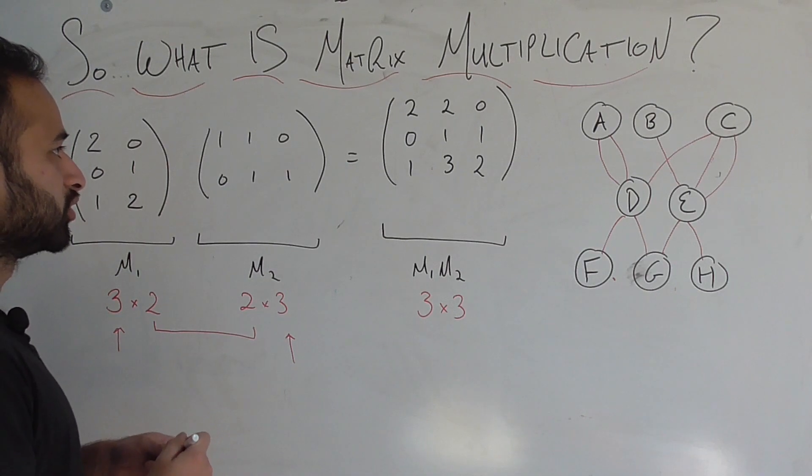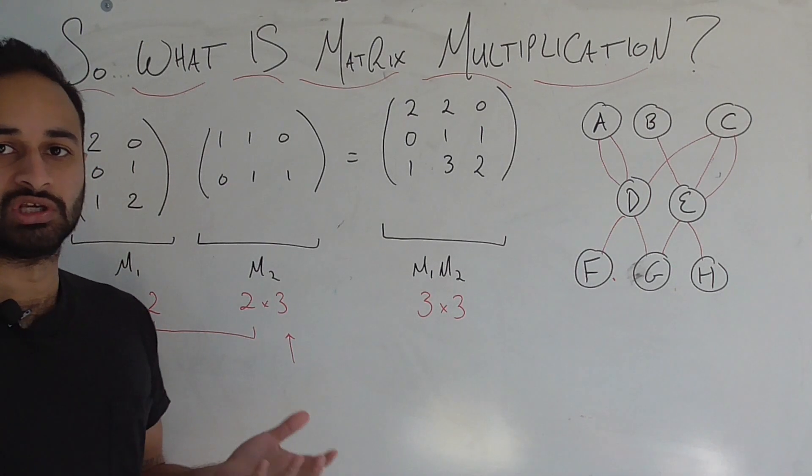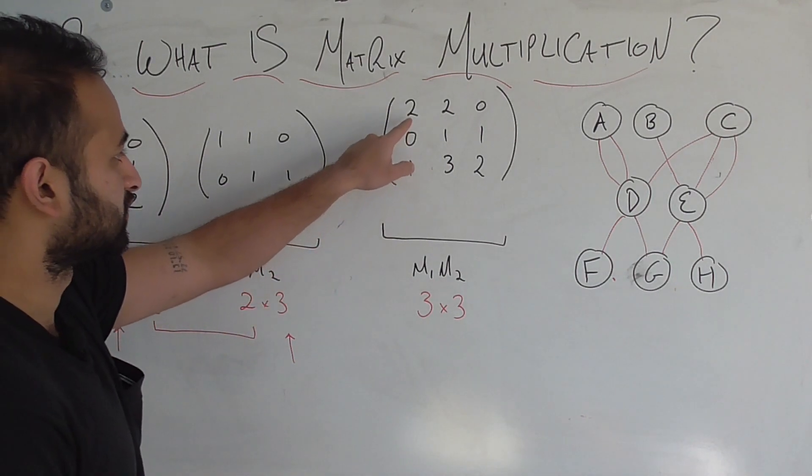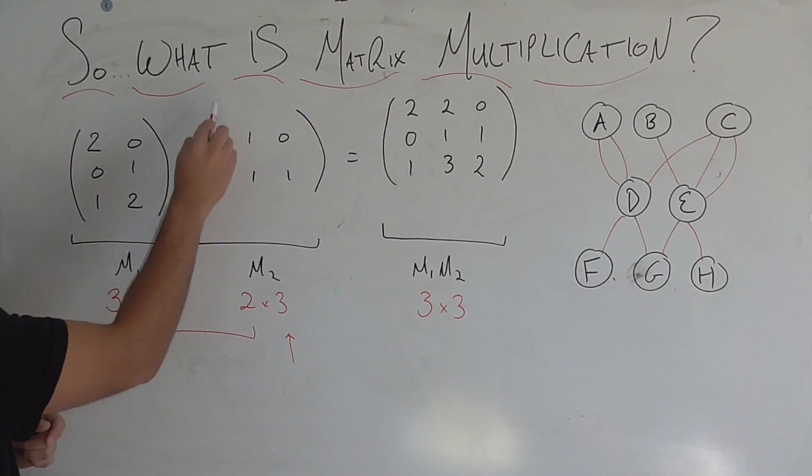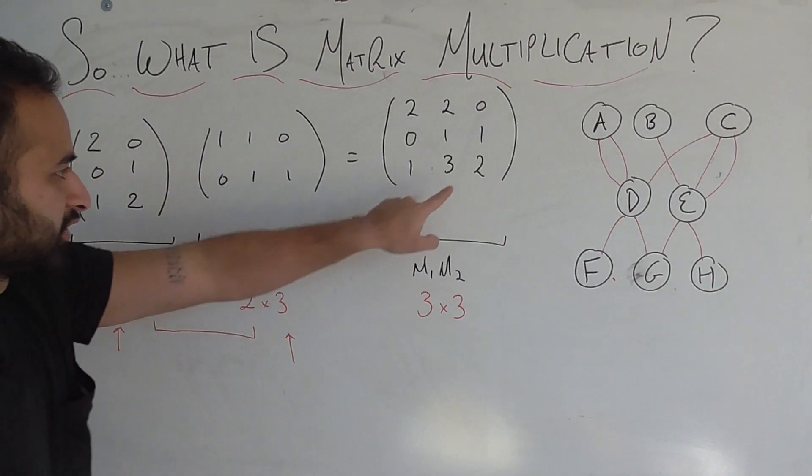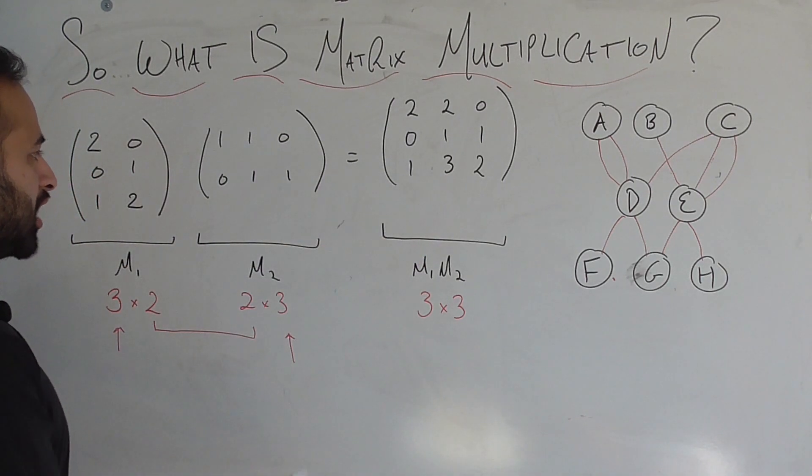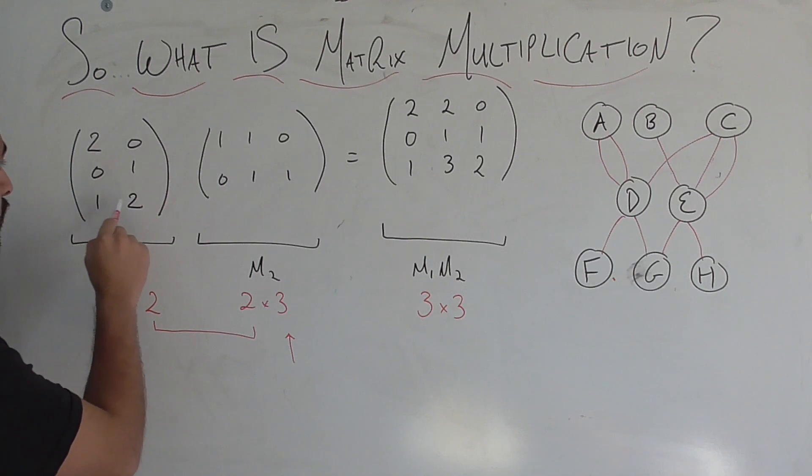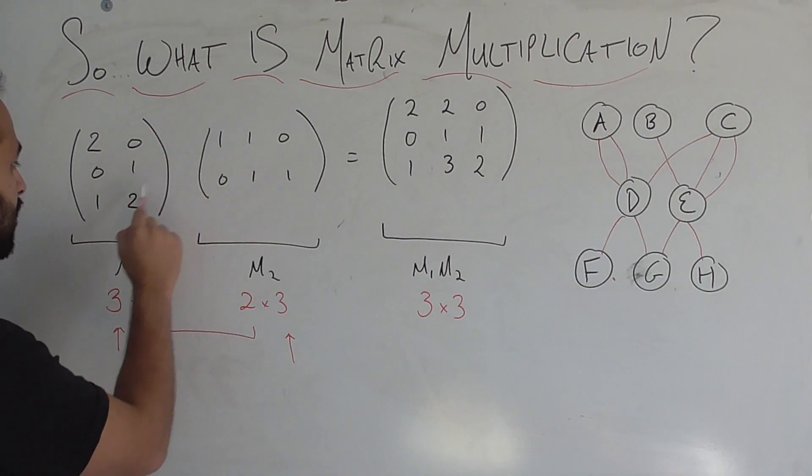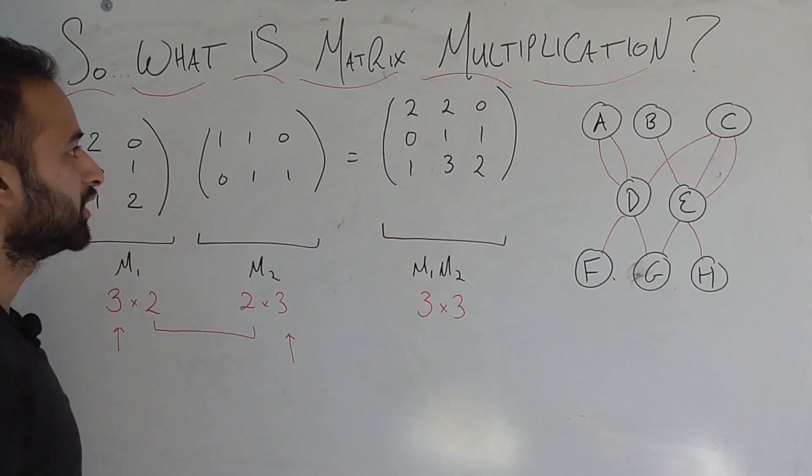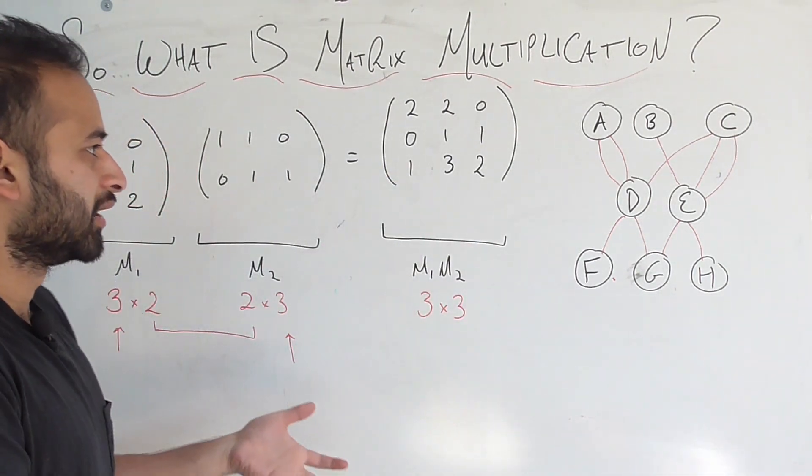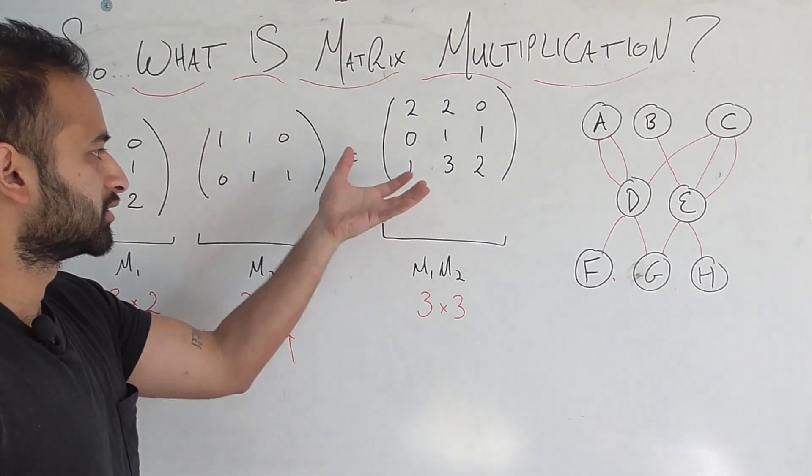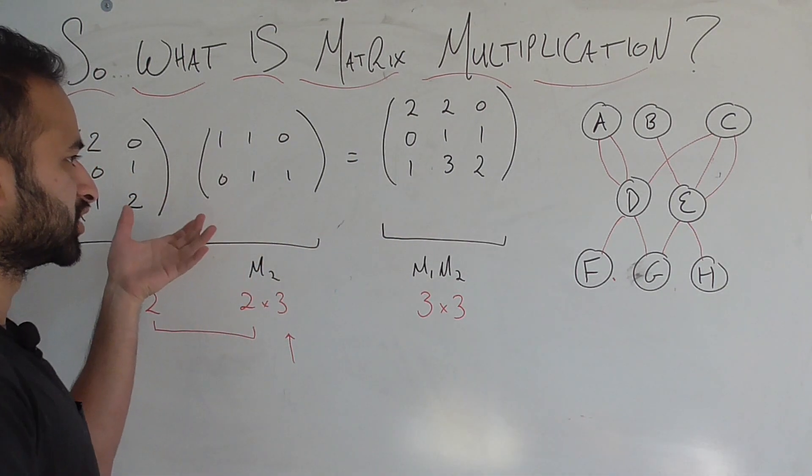And to actually compute the product it's really not a huge deal, right? For example to get this first 2, we would do a dot product of the first row by the first column, to get this 3 for example, we would do the dot product of the third row with the second column. So 1 times 1 plus 2 times 1 gives us that 3, and all of the 9 numbers are obtained in that way. But again, what does this really mean? How is this matrix related to these 2 matrices?